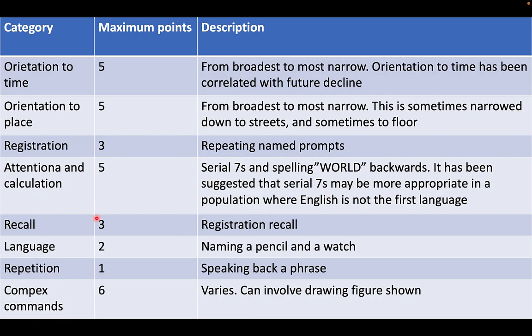Then you also recall the three objects that you told them before to keep in mind. The language section is scored out of two — you tell them to name a pencil or a watch, just point to them and ask them what each object is. Then repetition — you tell them to say a phrase back to you. And for the complex commands, it's given a score out of six. This can actually involve drawing a figure, specifically intertwining pentagons.